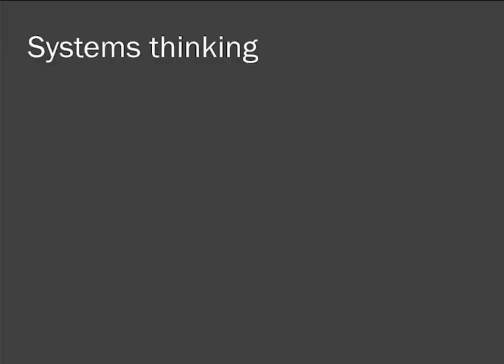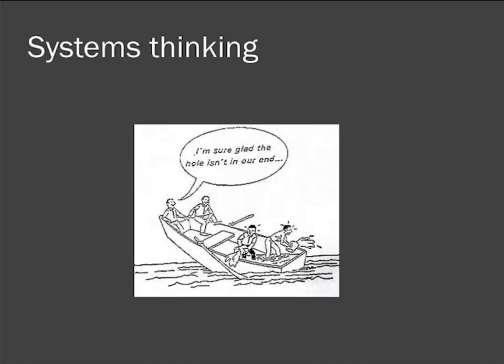We want to do this transformative innovation — to provide function and service in a sustainable way — and it's important to think systematically. As one cartoon puts it: 'I'm sure glad the hole is in our end of the boat.' We're all connected. Scientific endeavors are often reductionist — we hold all variables constant except one and study how a chemical or product or process might behave. But it's important to think about how it functions within the system: what the feedback mechanisms are, what the causal relationships are, so we can avoid those unintended consequences.